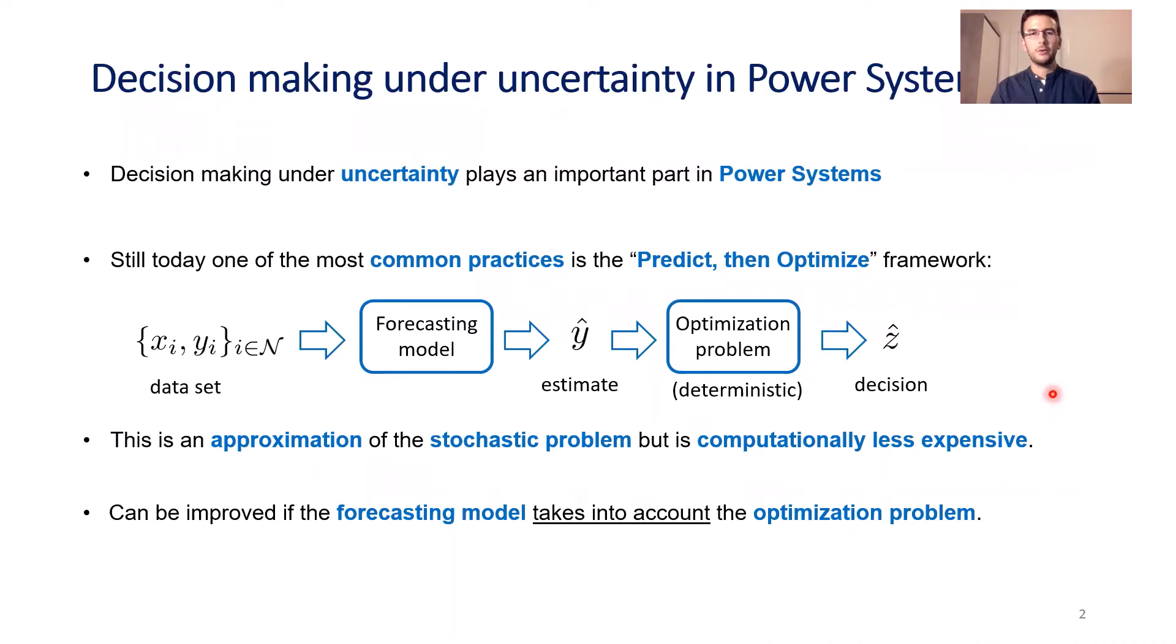Decision-making under uncertainty plays an important role in power systems today. Still, one of the most common practices is the predict-then-optimize framework to tackle these problems. In these problems, we have a dataset of contextual information and uncertain parameters, where contextual information helps explain the uncertain parameter. We use this dataset as input to a forecasting model, which produces an estimate that we use in the deterministic version of the optimization problem to produce a final decision.